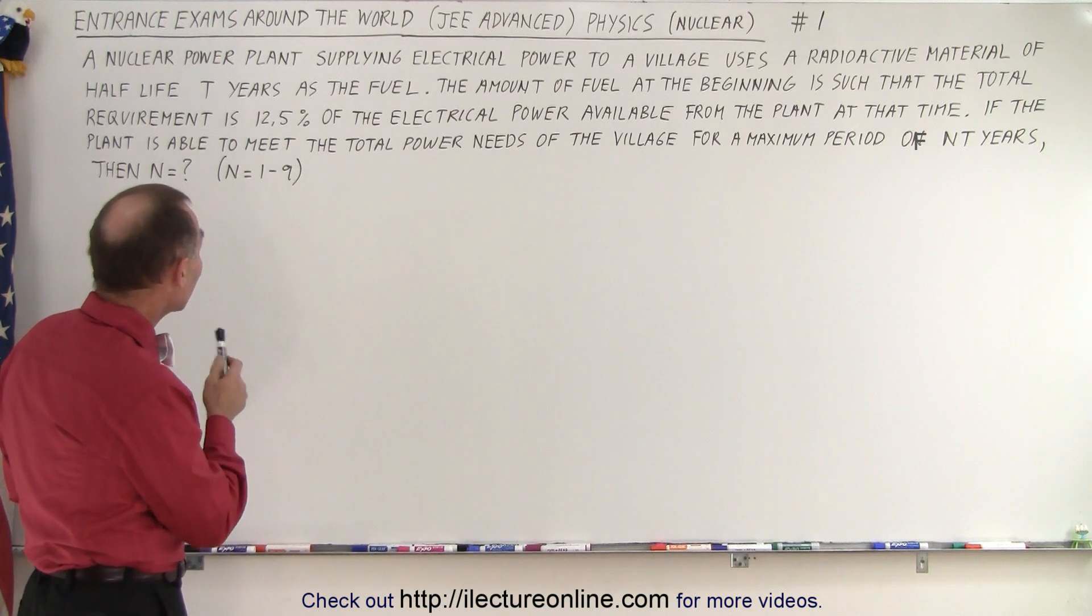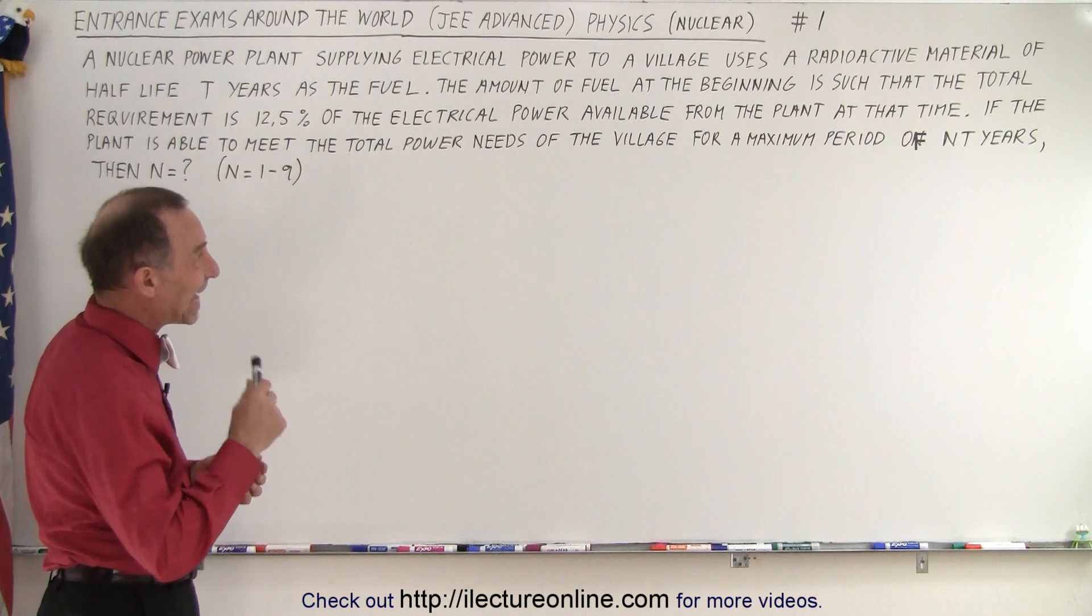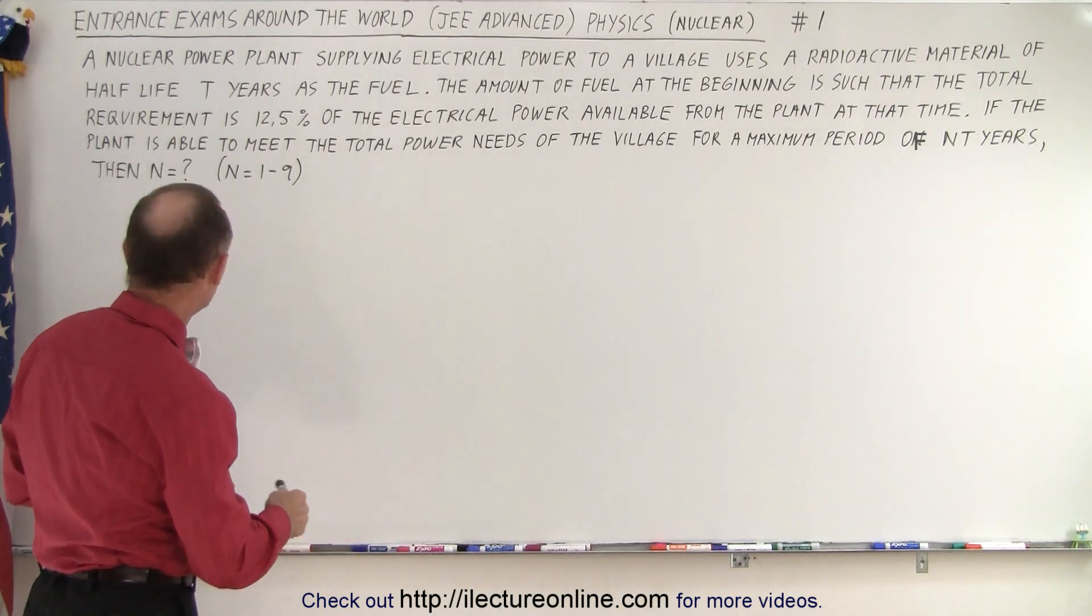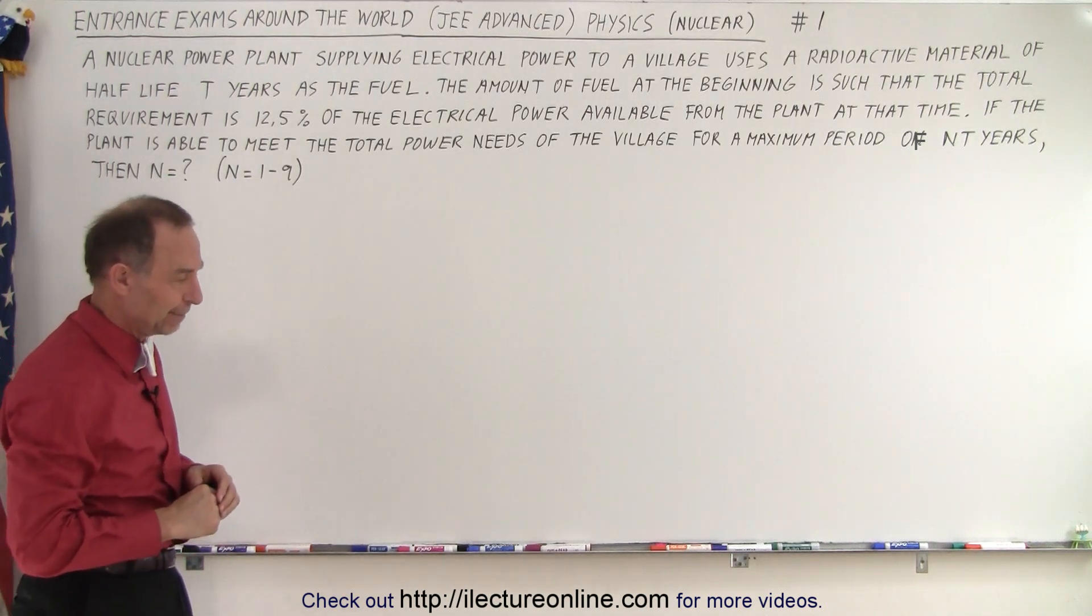If the plant is able to meet the total power needs of the village for a maximum period of n times t years, then n equals, and of course n is an integer between 1 and 9.